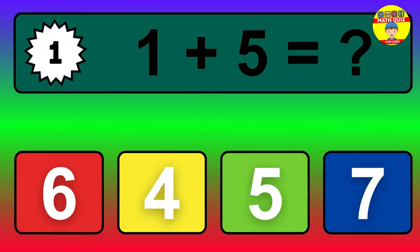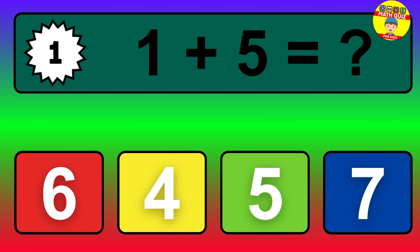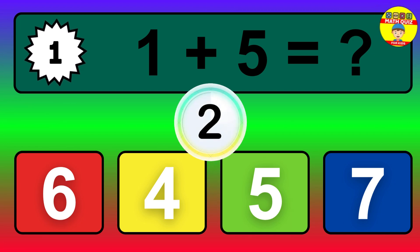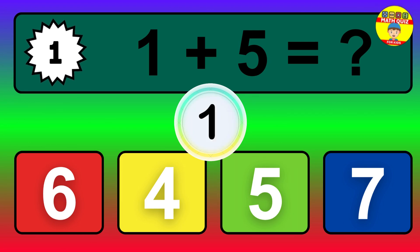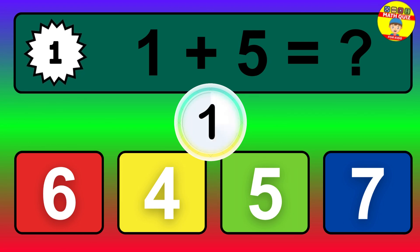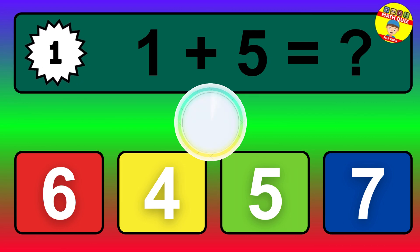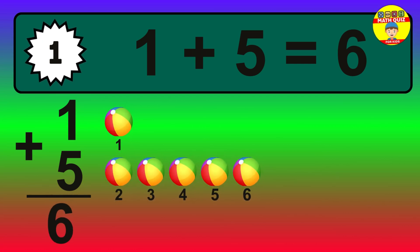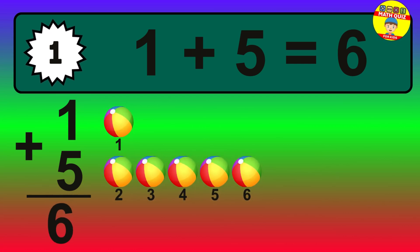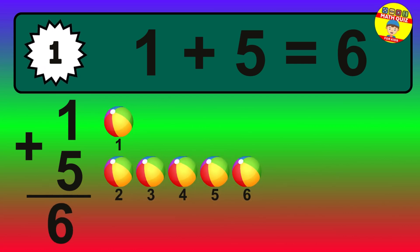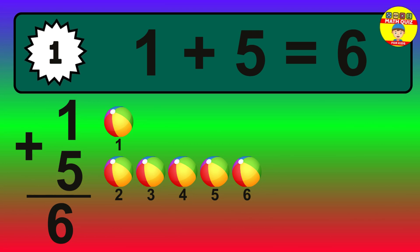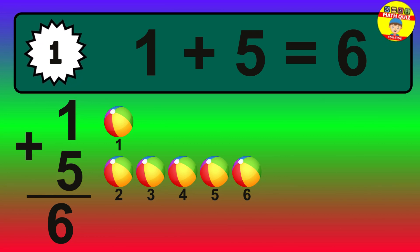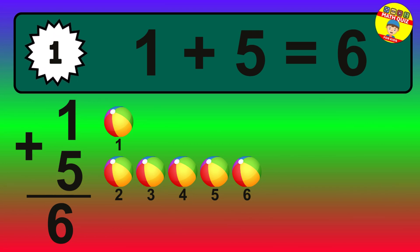Question 1. 1 plus 5 equals what? The answer is 1 plus 5 is 6. Let's count it: 1, 2, 3, 4, 5, 6.